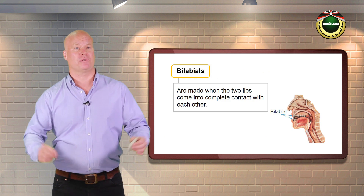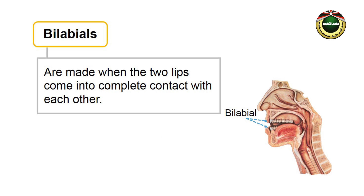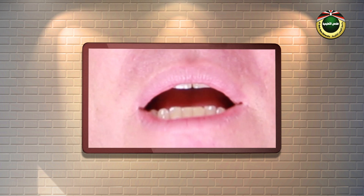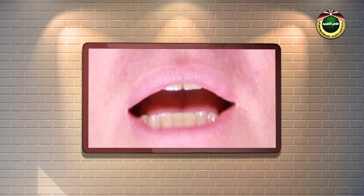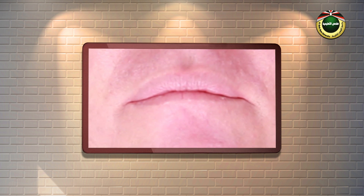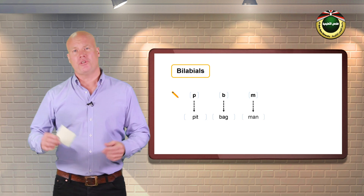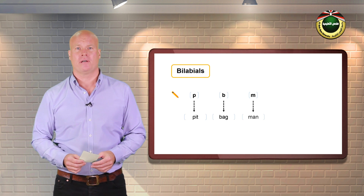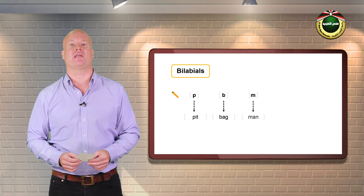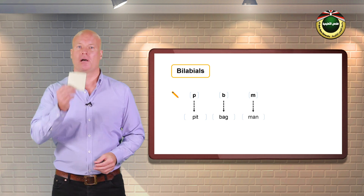One: bilabials. Bilabial sounds are made with both lips coming into complete contact with each other. English bilabial sounds are p as in pit, b as in bag, and m as in man. Notice that when producing p, the extra force you exert results in a puff of air that accompanies the release of this sound.